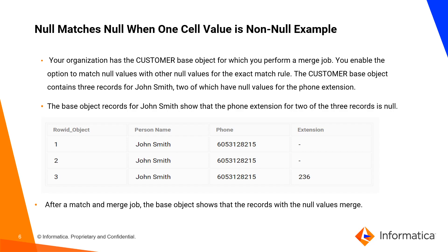Let's take an example where we enable null matches null and one of the cells has a non-null value. We are taking the base object as customer and we have three records with row ID object 1, 2, and 3. For John Smith, row ID object 1 has extension as null, row ID object 2 also has phone extension as null, and row ID object 3 has phone extension 236. Since we have configured null match null, when we run match and merge, row ID object 1 and row ID object 2 will get merged with each other, and in the base object we will have two records: row ID object 1 and row ID object 3.